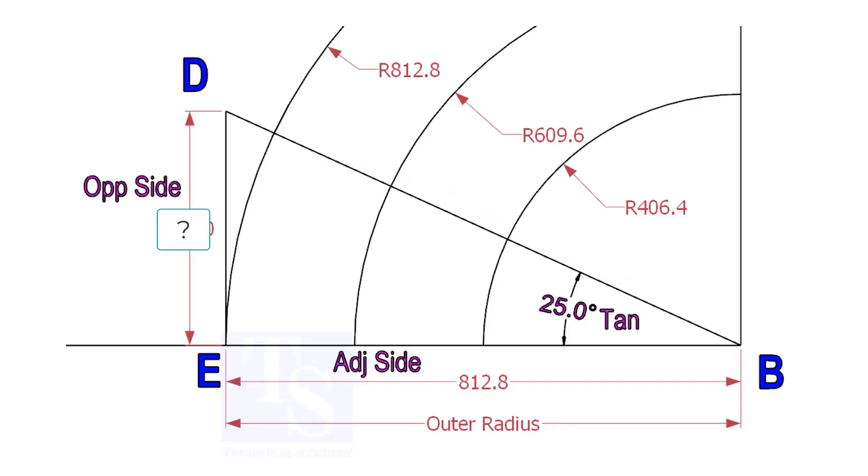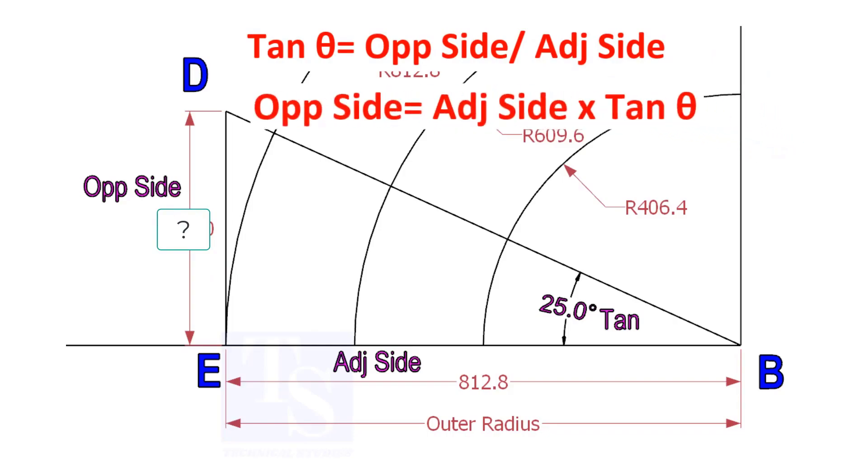To draw the line DB, we need to know the length of the line ED. To calculate ED, we need to apply the formula: tan theta equals opposite side divided by adjacent side. Opposite side equals adjacent side multiplied by tan theta.